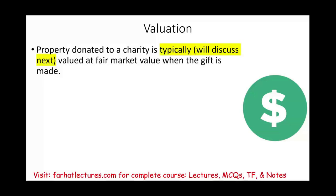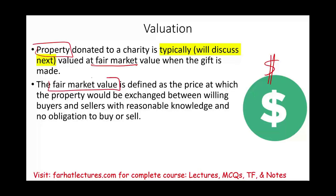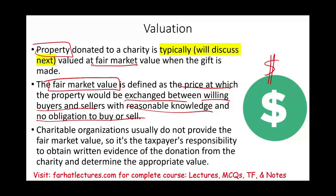Valuation means assigning a dollar amount to what you contributed. Cash is easy to value. Donated property is typically valued at fair market value — the price at which property would be exchanged between a willing buyer and a willing seller with reasonable knowledge and no obligation. The charity does not determine fair market value; it is the taxpayer's responsibility to obtain written evidence and determine the appropriate value. For smaller items like clothing under $500, the charity can help, but for larger items you must handle the valuation.